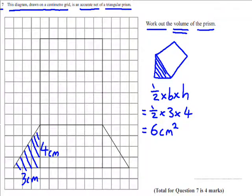So we found the area of the cross section. Now I'm going to times it by the length, which is that bit. And looking on our net, it's that bit. So by counting the centimeter squares, the length is 7 centimeters.